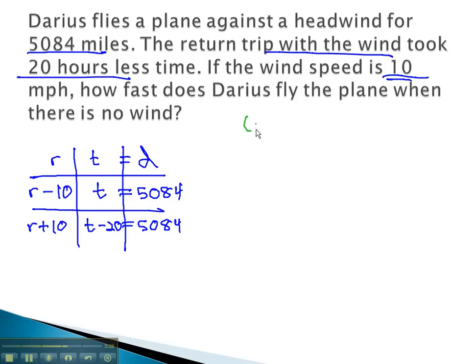We can now see the simultaneous product: r minus 10 times t equals 5,084, and r plus 10 times t minus 20, from the second row, equals 5,084.